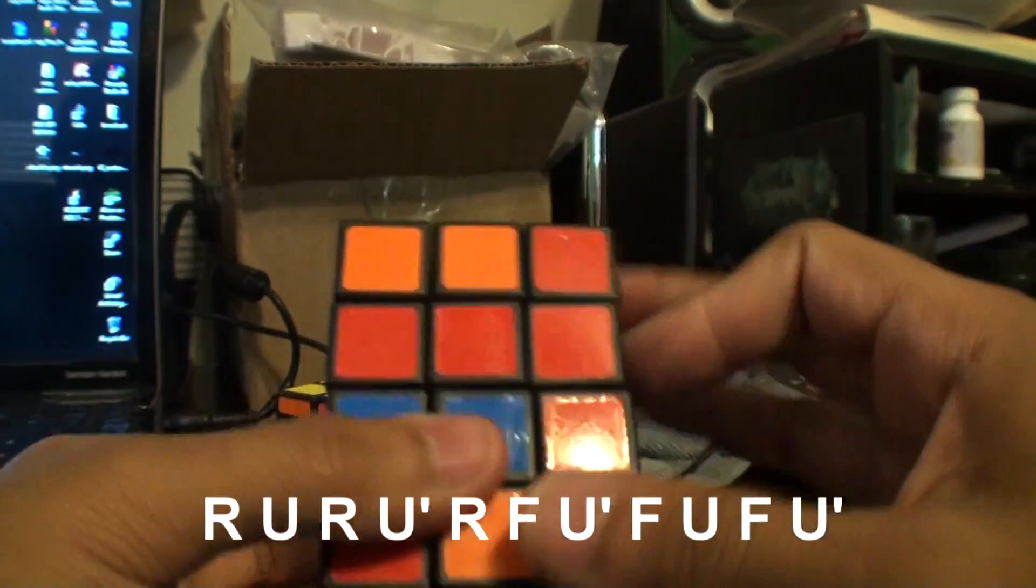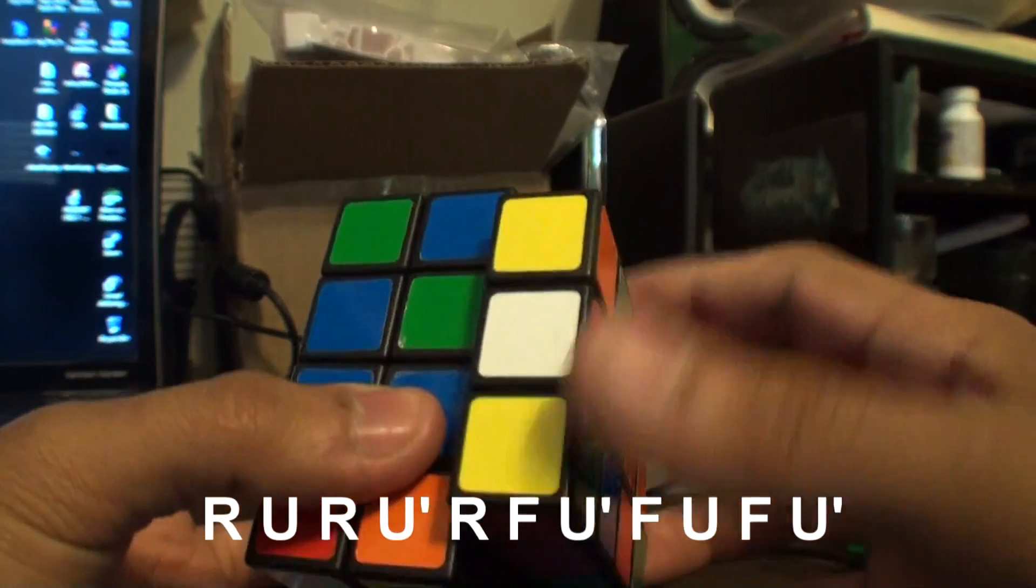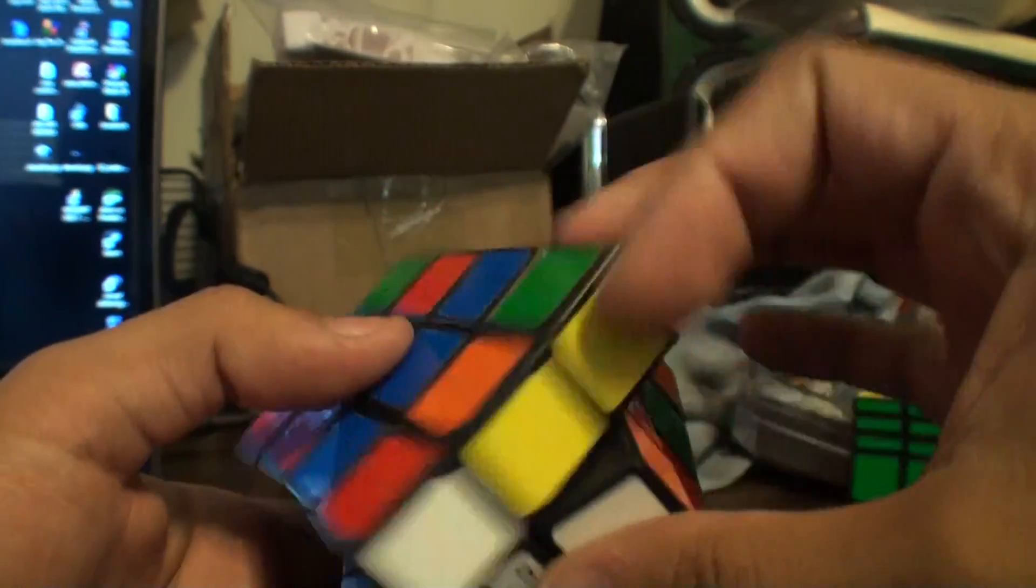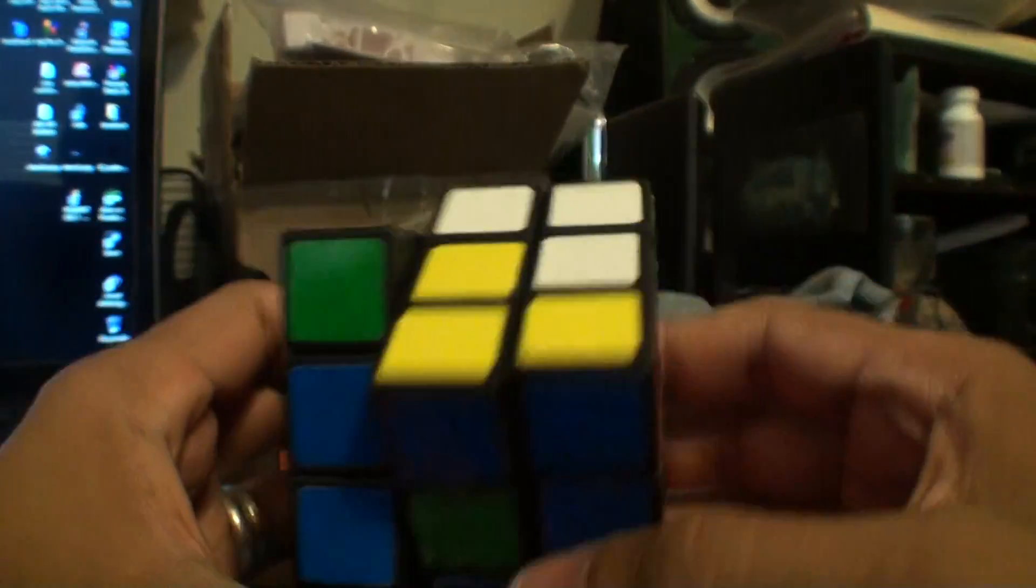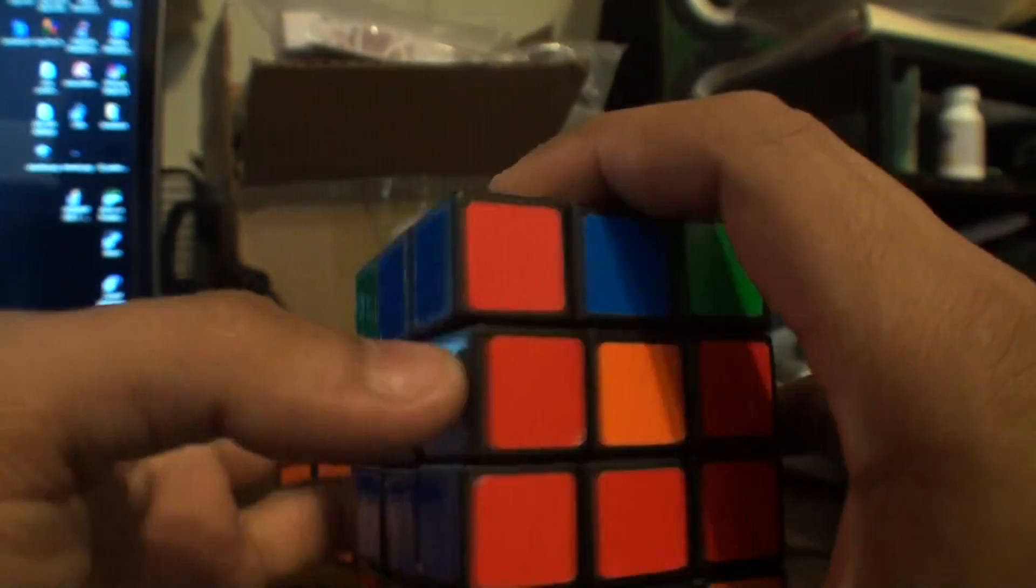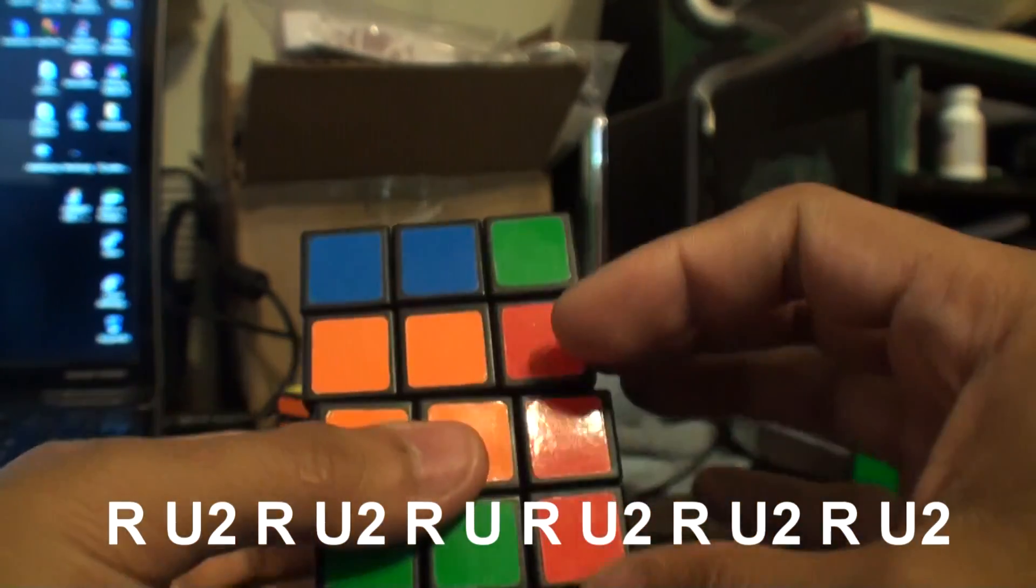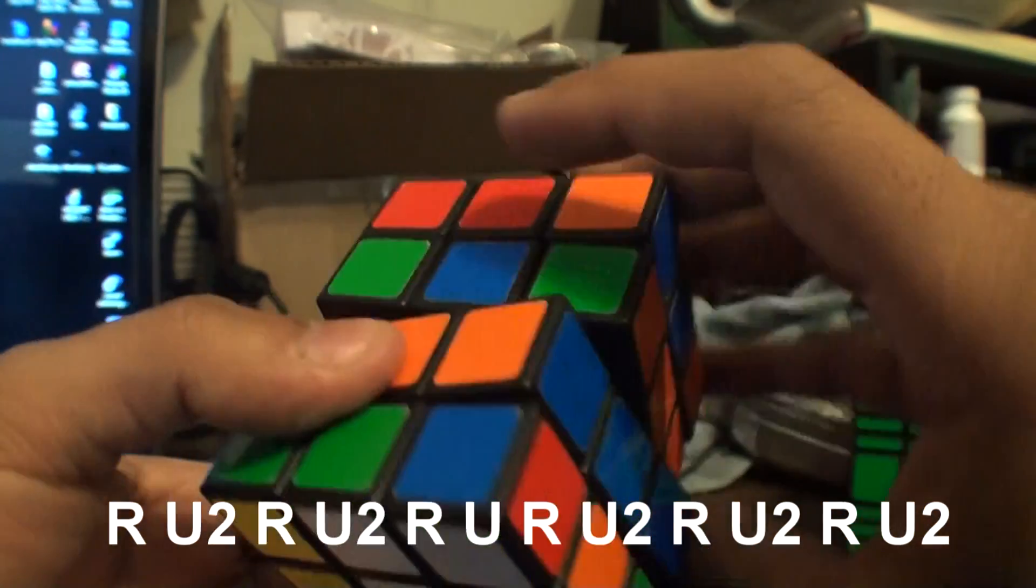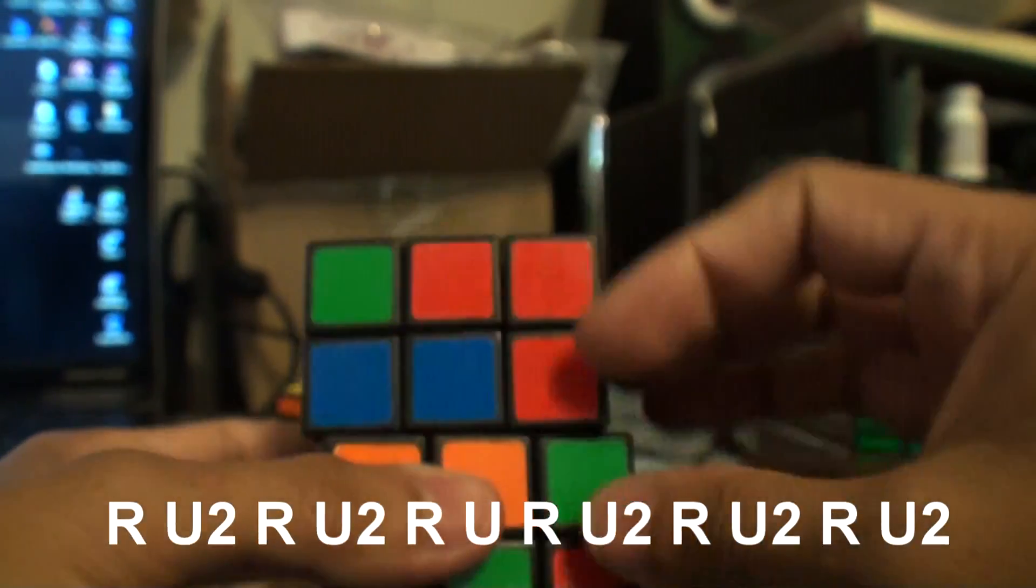And then while doing these it should solve these middle ones. So R U R U' R F U' F U F U'. We just have two H perms to do because we've got these all opposite.